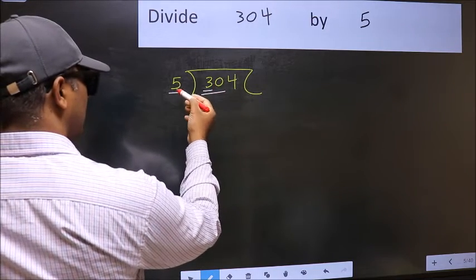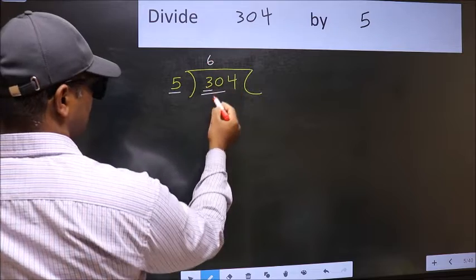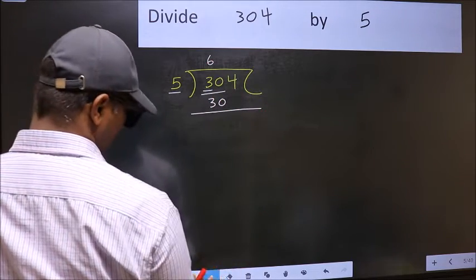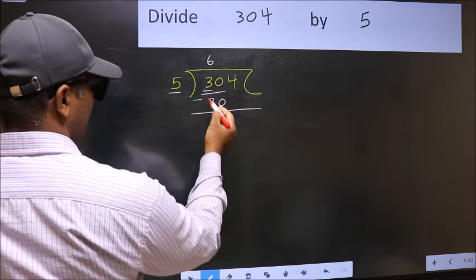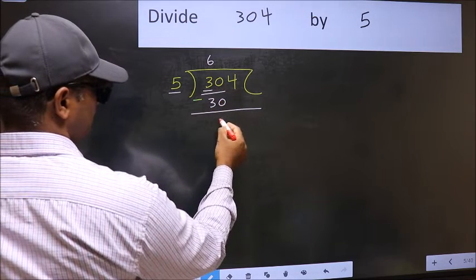When do we get 30 in the 5 table? 5, 6, 30. Now you should subtract. 30 minus 30, 0.